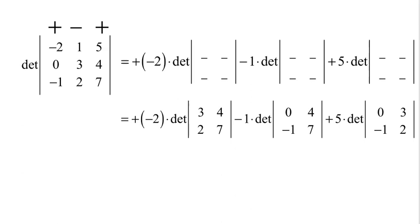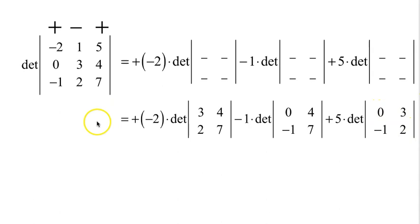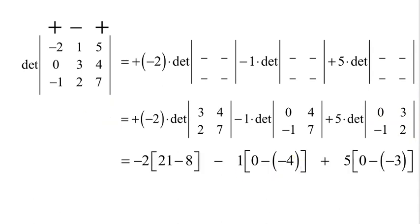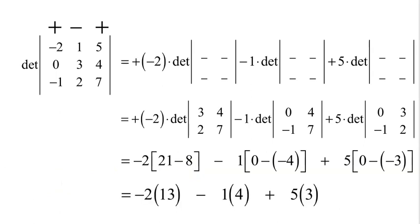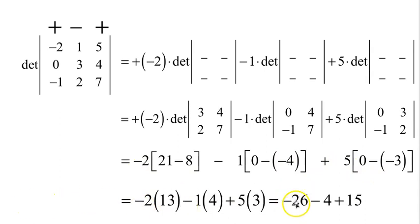Now we evaluate the 2 by 2 determinants. [3,4;2,7] gives 21 minus 8. [0,4;-1,7] gives 0 minus negative 4: 0 times 7 is 0, negative 1 times 4 is negative 4, so 0 minus negative 4 is positive 4 — but there's a minus 1 here, so be careful. And [0,3;-1,2] gives 0 times 2 minus negative 3 times 0, which is 2 minus negative 3. So 21 minus 8 is 13. 13 times negative 2. Minus 1 times 4. And then plus 5 times 3. So we get negative 26 minus 4 plus 15.